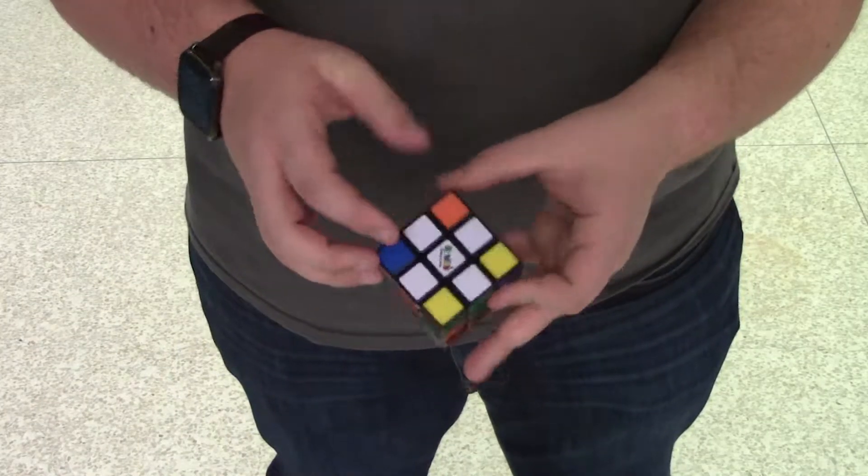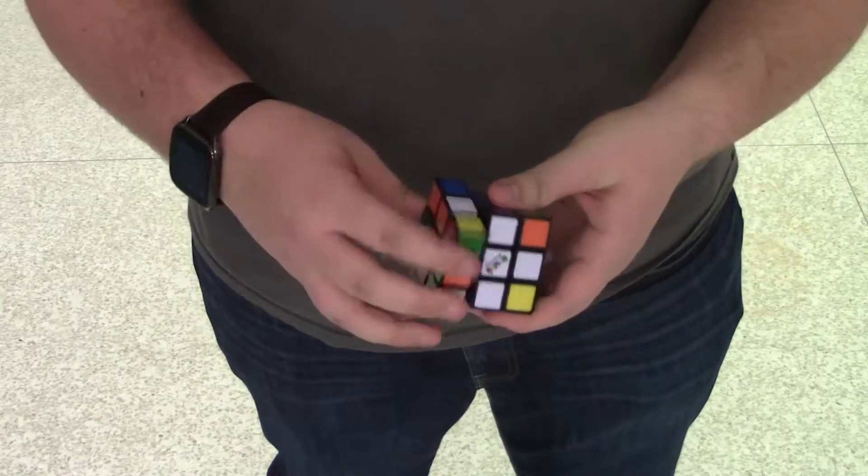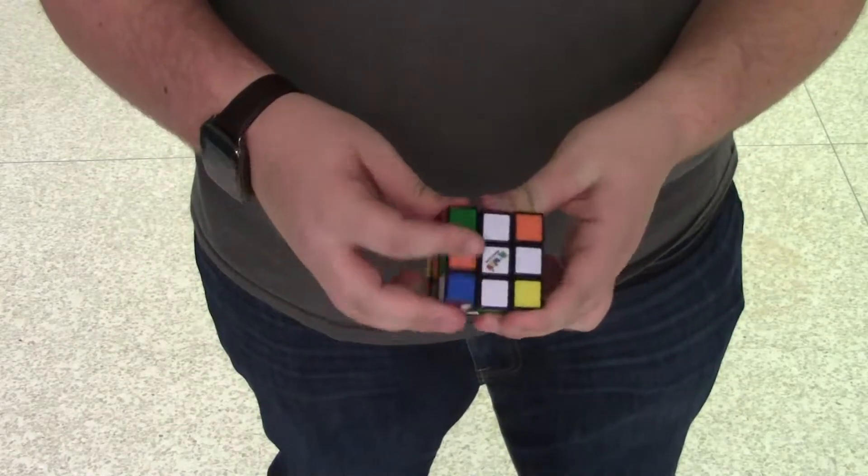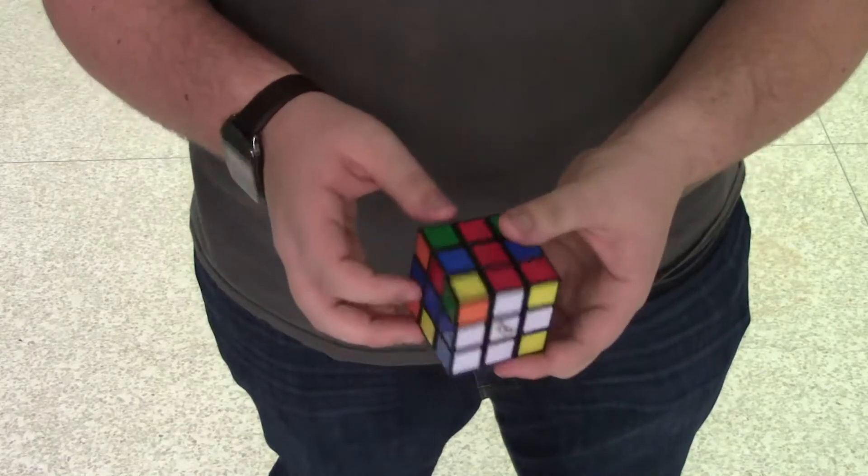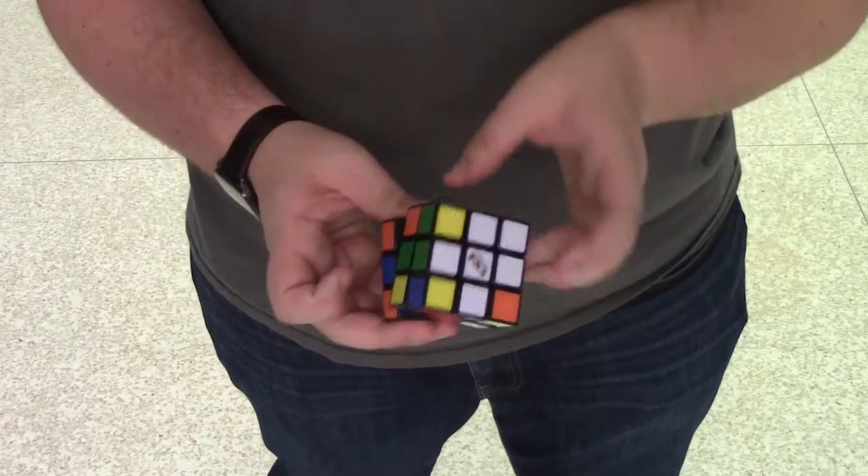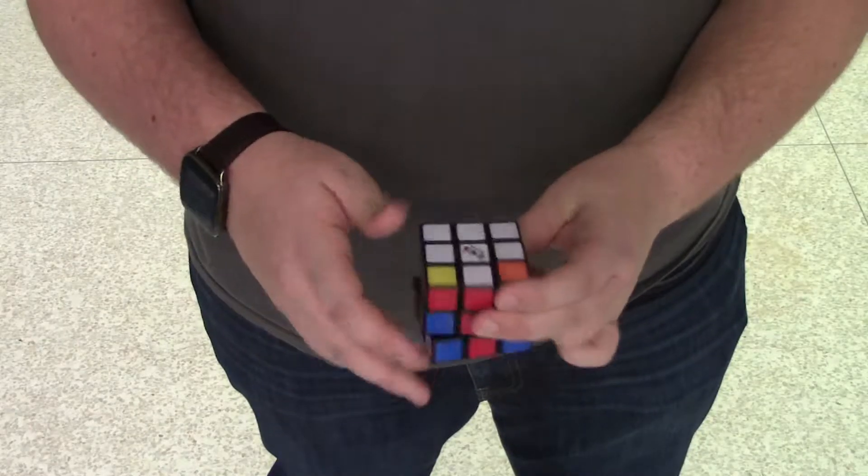Okay, so the second step of solving a Rubik's Cube is to solve the corners of the top where you just made the cross. So doing this, there's a specific pattern. Here it goes: you turn the right side down clockwise, you put the right side back up, and then you turn the bottom back counterclockwise.